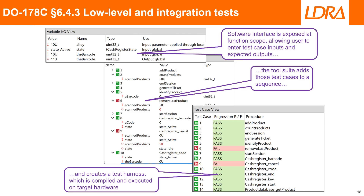The LDRA tool suite supports almost all of the dynamic analysis requirements of DO-178C. The low-level test component automatically generates test drivers and harnesses or wrapper code, enables tests to be easily and efficiently executed, and stores both test data and results. These tests can be automatically regressed, and the test data maintenance program is streamlined through the automatic detection of changes in source code, prompting repeats of tests as necessary.